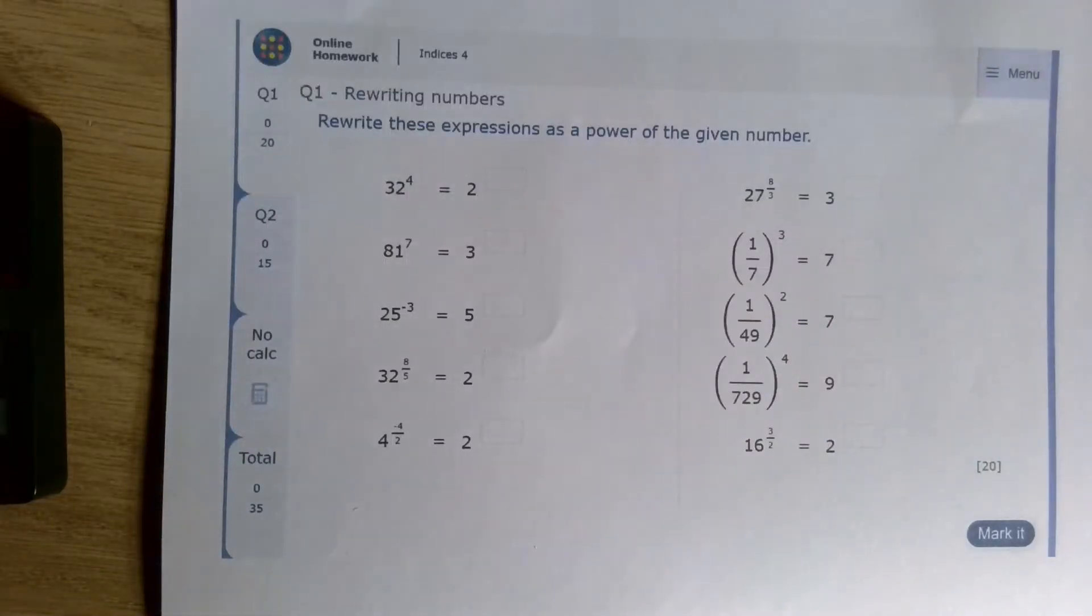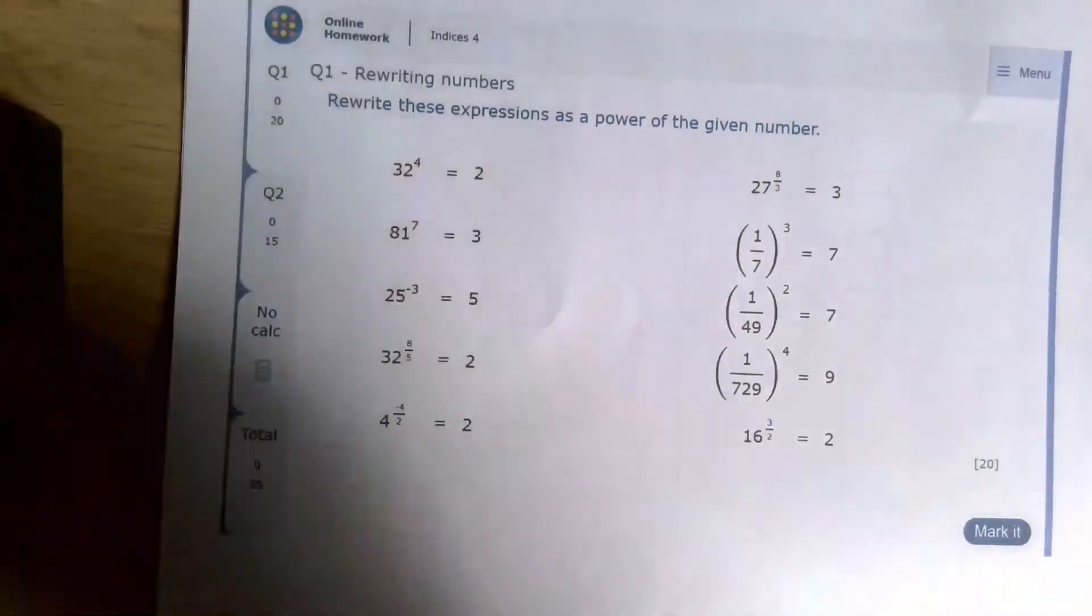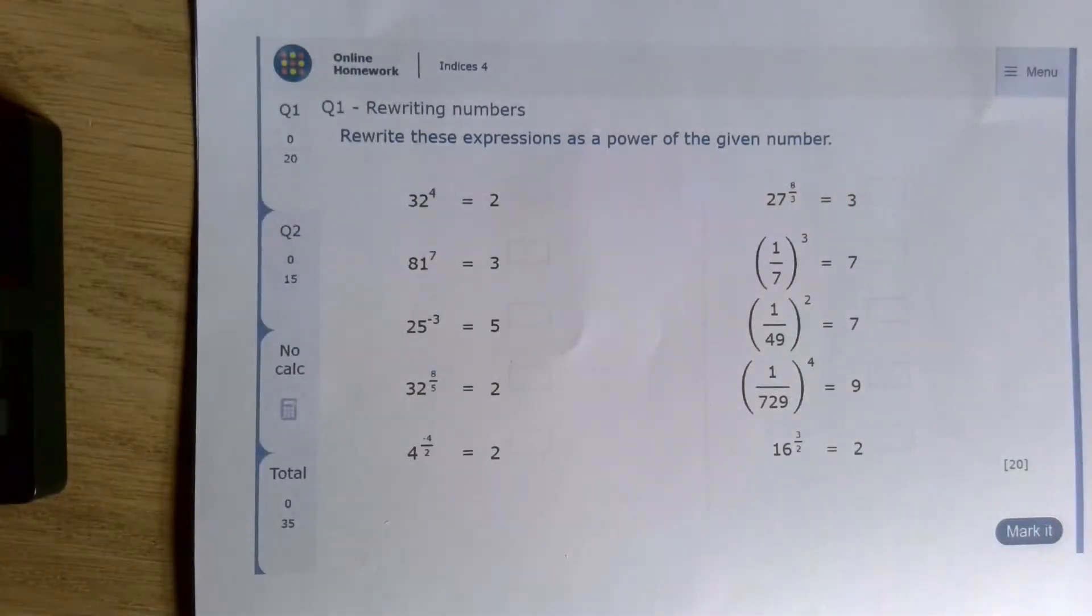Before we start this homework, let's make sure everyone is happy about the idea of different types of power. When we have just an integer power, for example here we have a power of 4, that literally means the base, which in this case is 32, multiplied by itself 4 times.